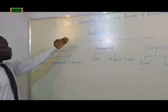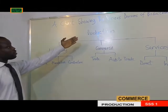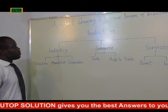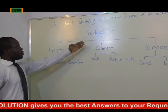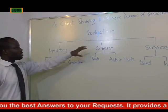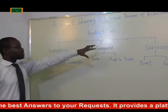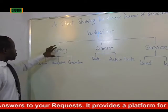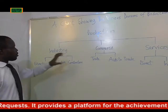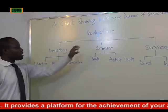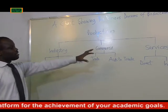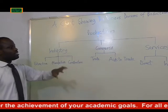A chart showing the various divisions of production: under production, we have three stages — industry, commerce, and services. Under industry, we have extractive, manufacture, and construction. Under commerce, we have trade and aids to trade. Under services, we have direct and indirect.